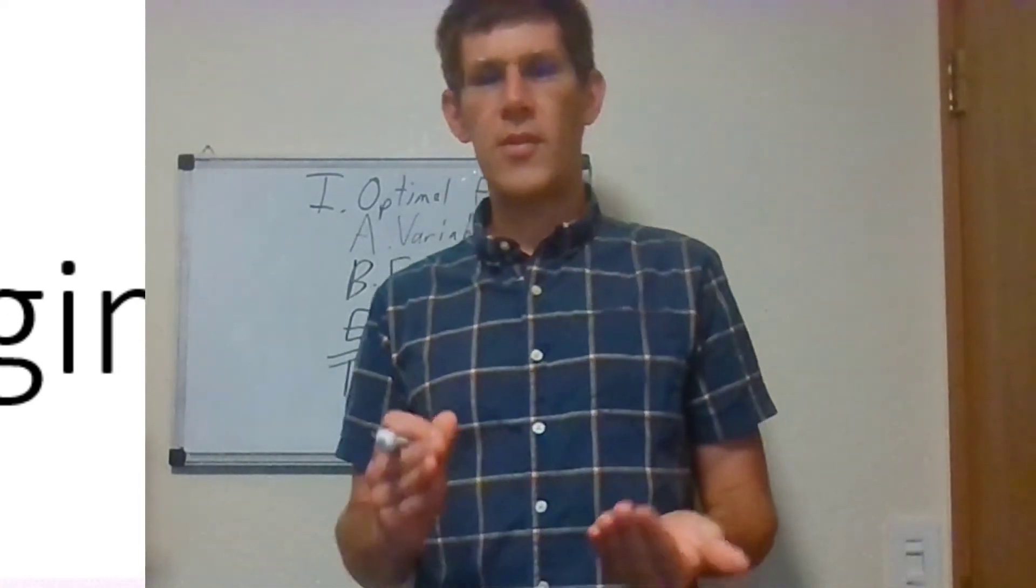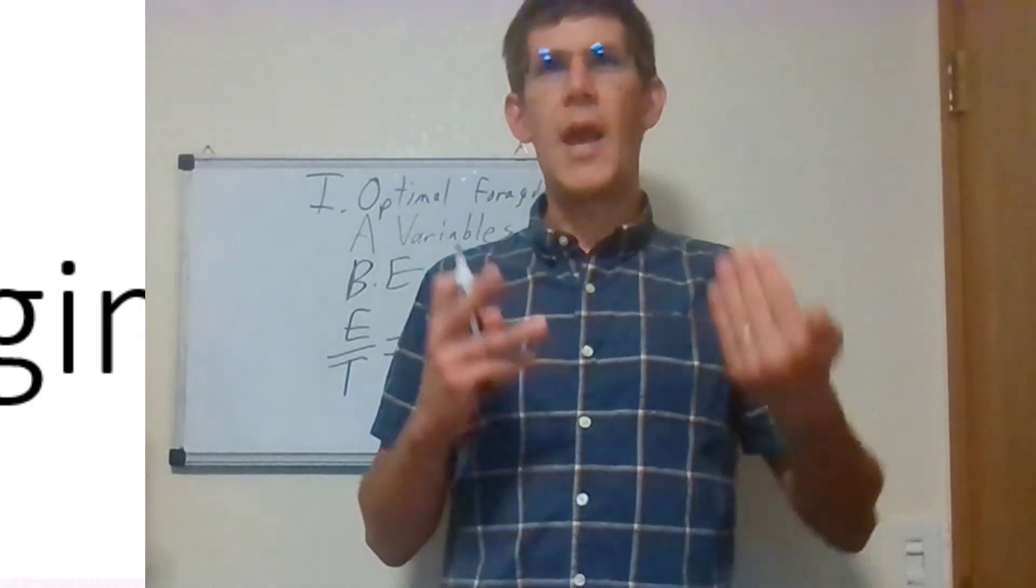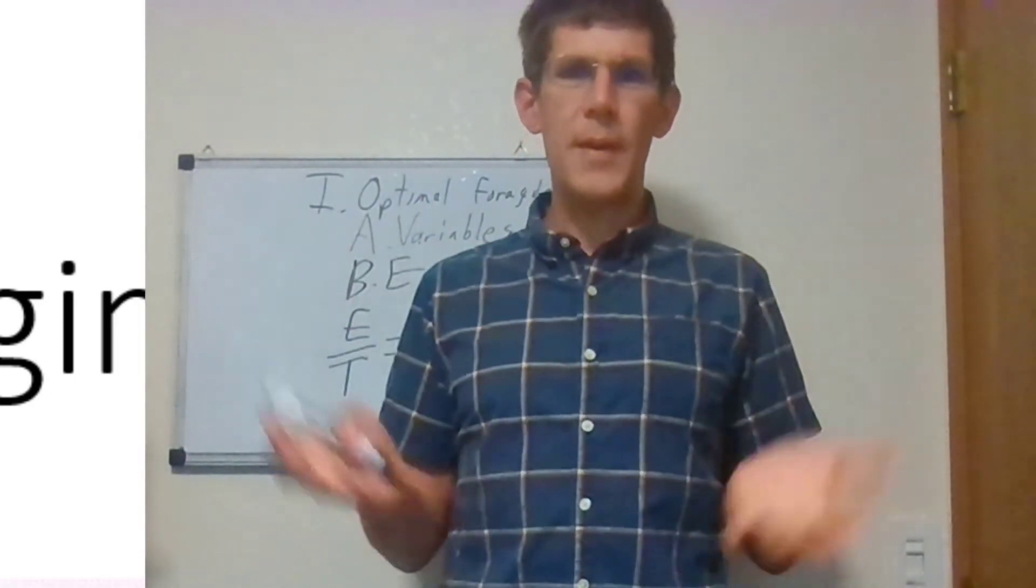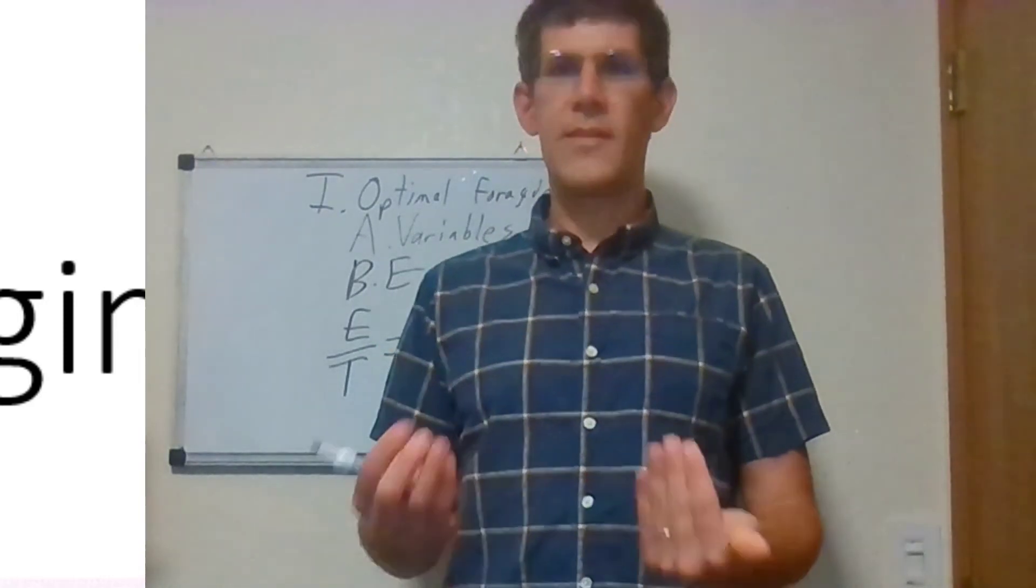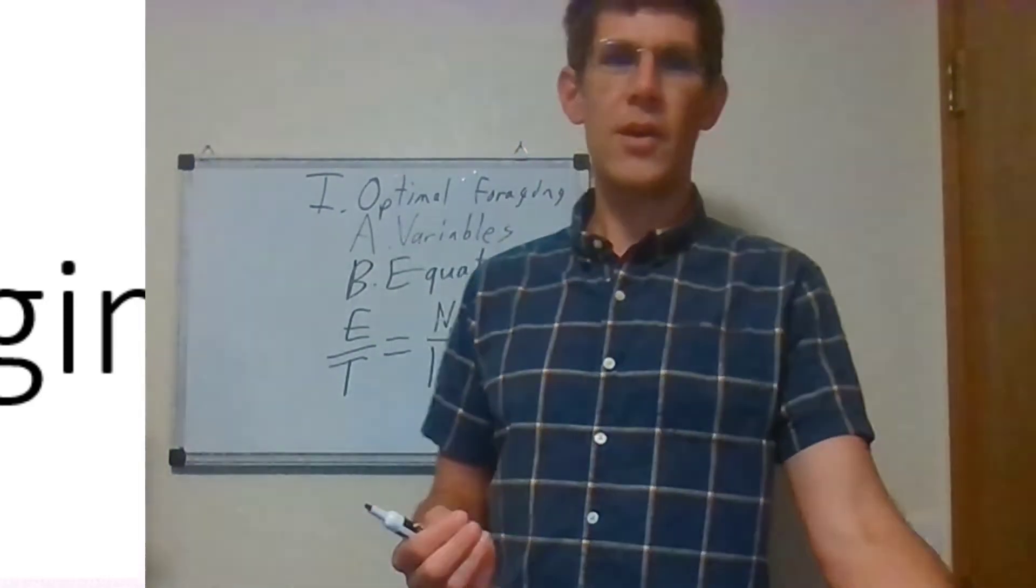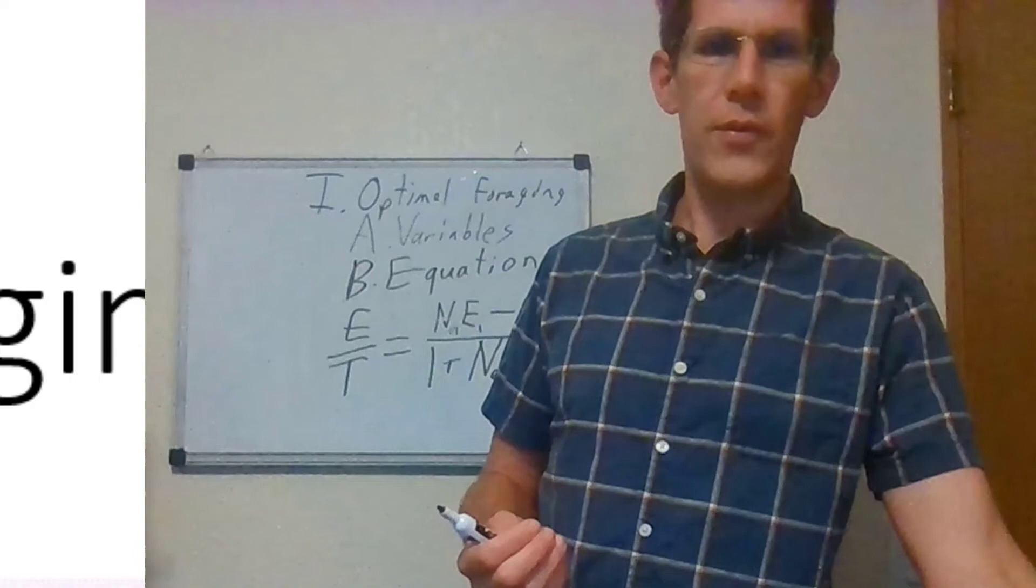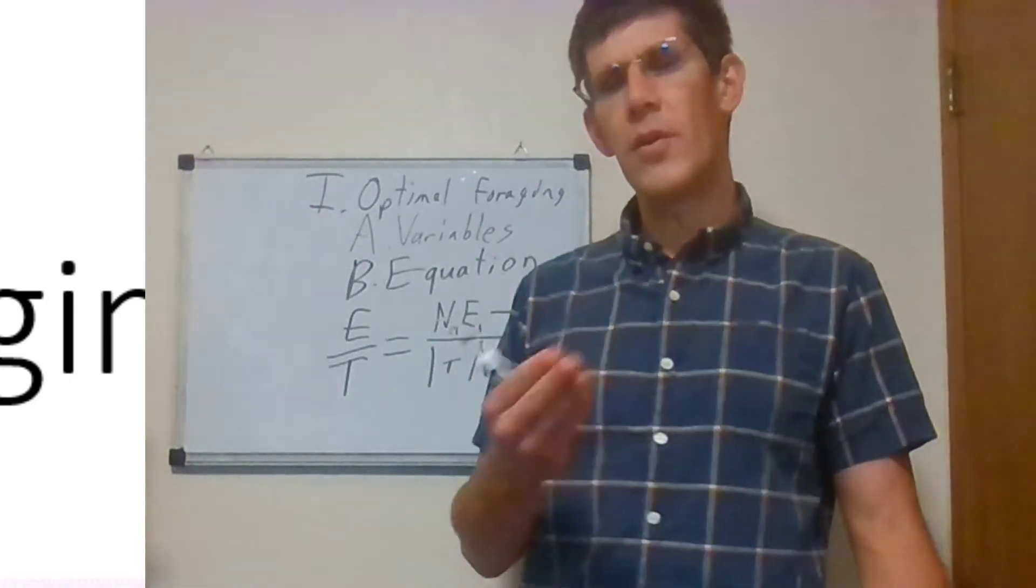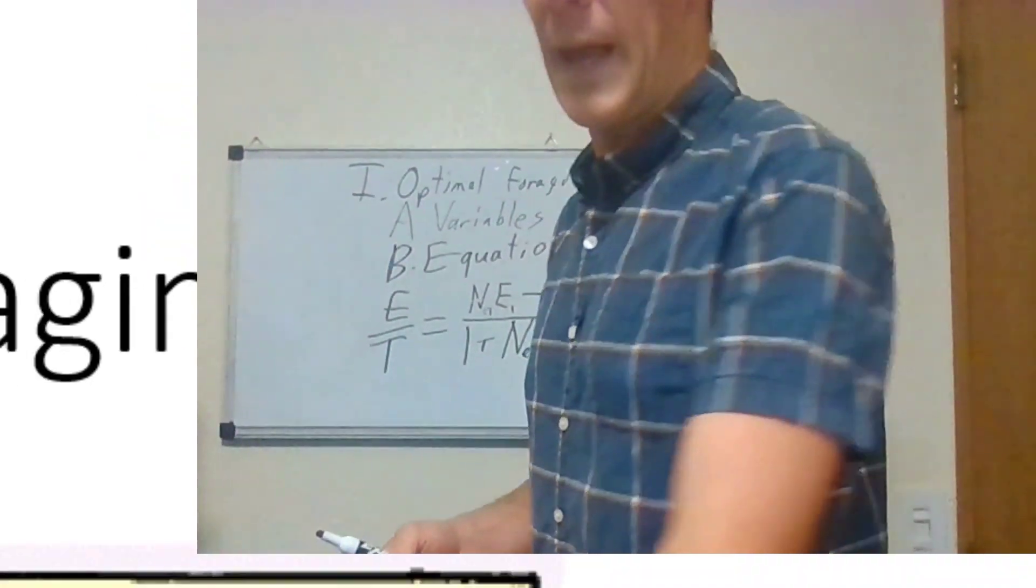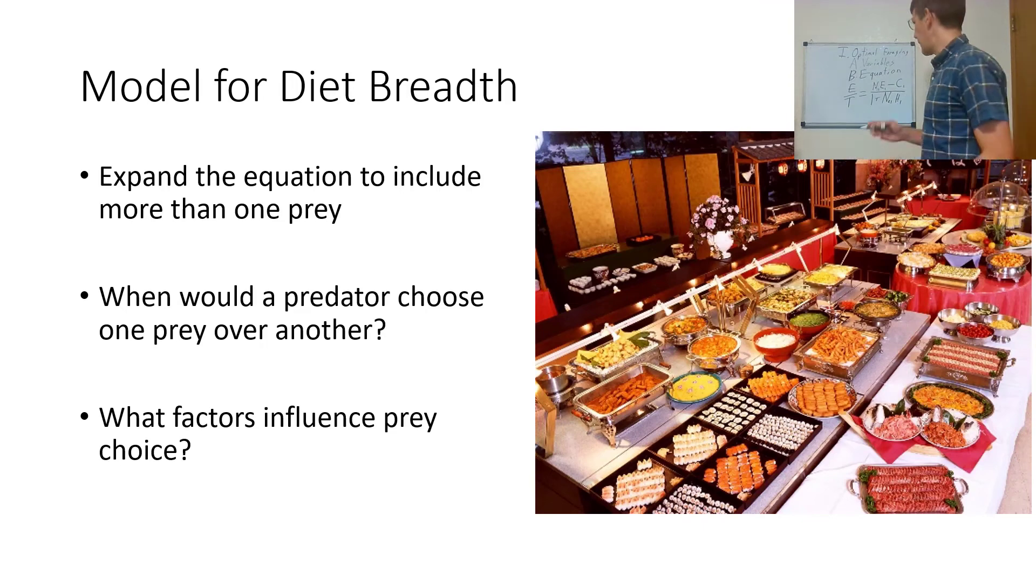With this equation, it's good to have a prey population that is large, gives a lot of energy, and does not require a lot of handling cost. This is the equation for a single type of prey. If you refer to your book, you can actually see what happens if you increase the diet breadth.